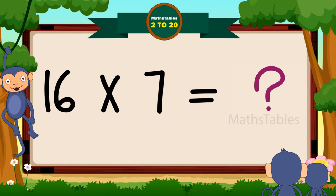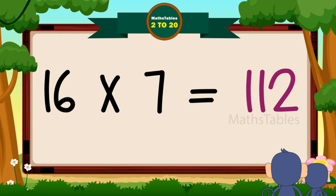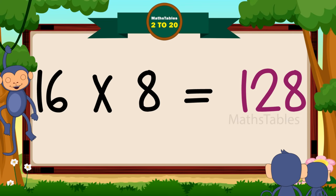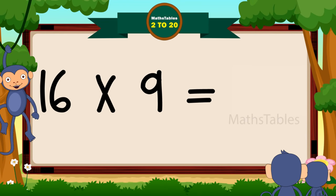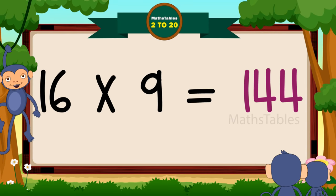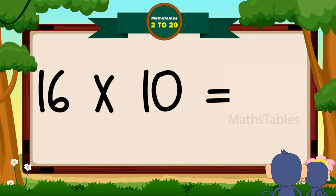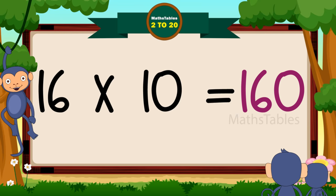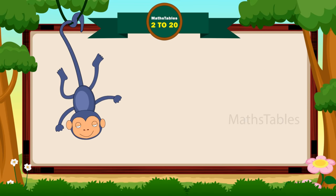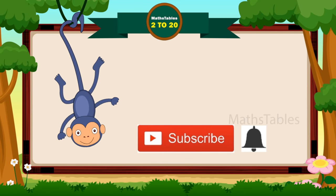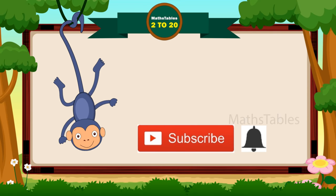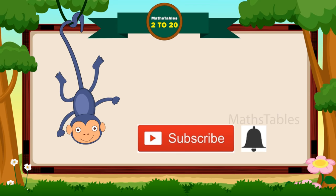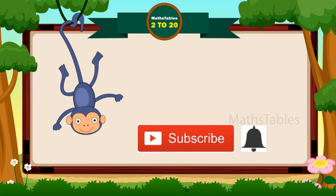16 sevens are 112, 16 eights are 128, 16 nines are 144, 16 tens are 160. Thank you.